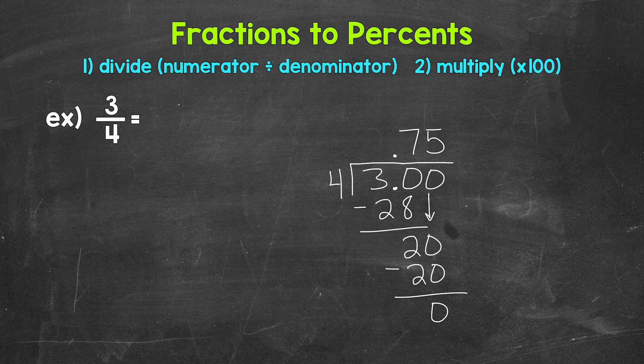Now we have that clean cut zero there at the bottom and nothing else to bring down within our problem. So we are done. 3 fourths equals 75 hundredths.